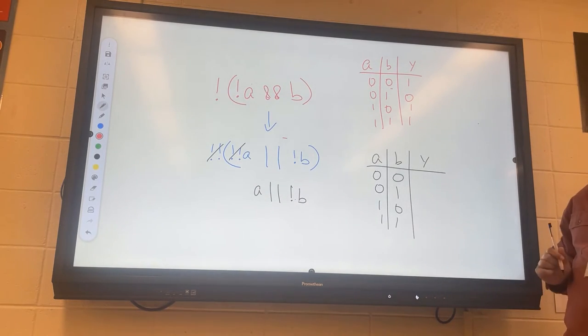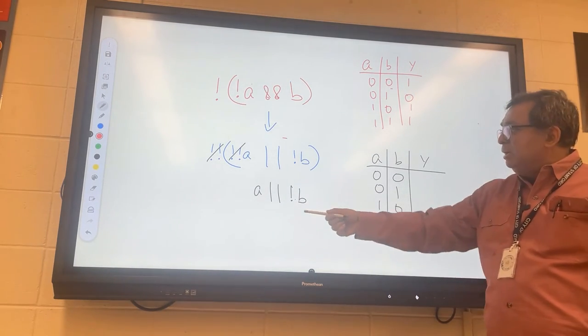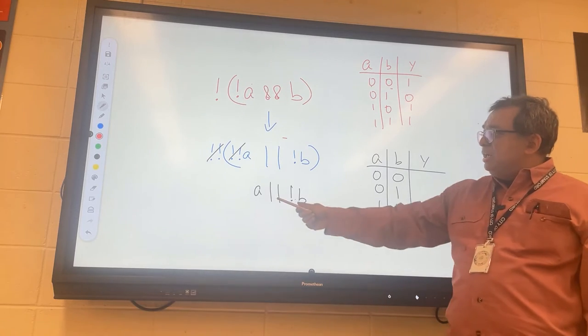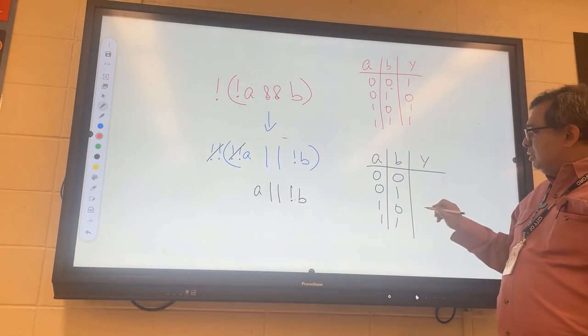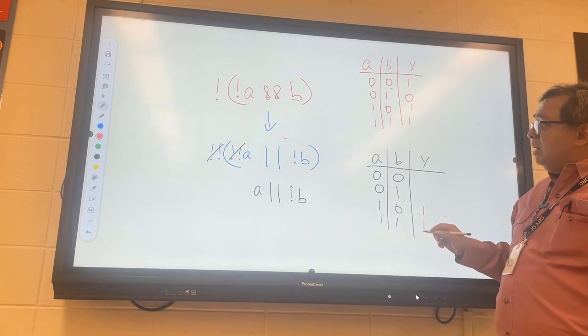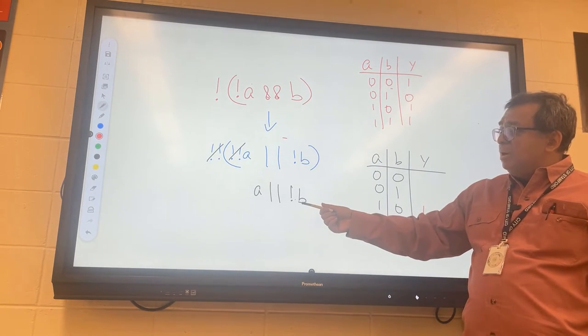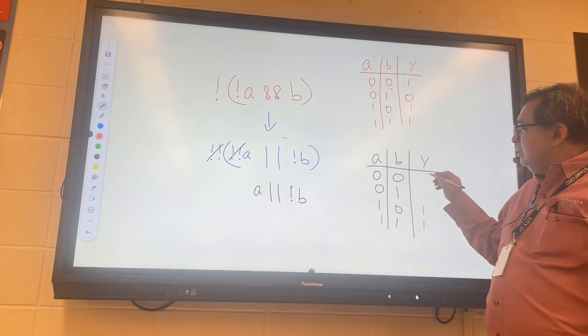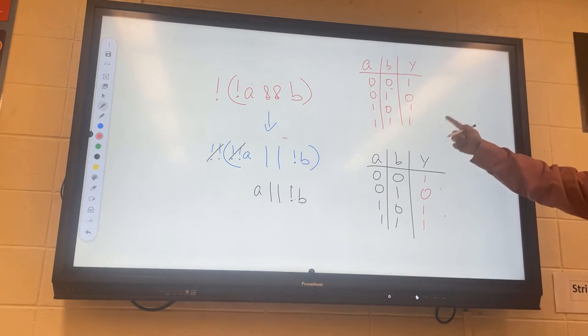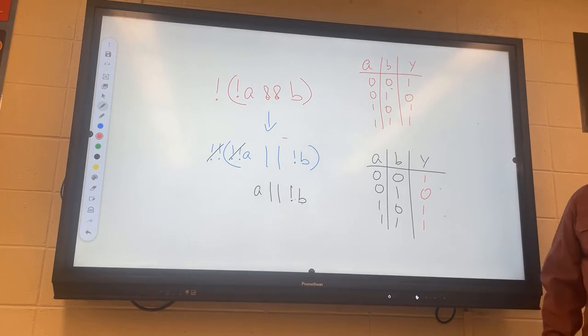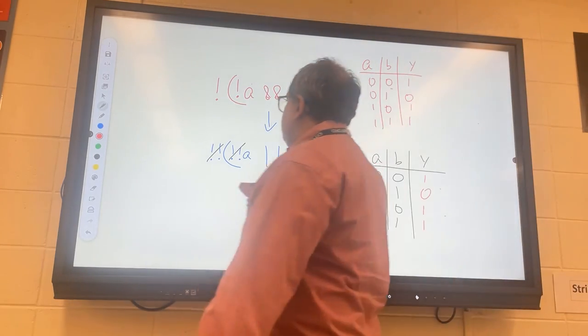Now let's look at this one and see if it comes up with the same thing. We can see that whenever A is one, the whole expression is going to be a one, so we know we're going to get ones here. Whenever B is zero, it's also going to be a one. This is going to be the only time that's not the case, and we can see that the two expressions are the same.